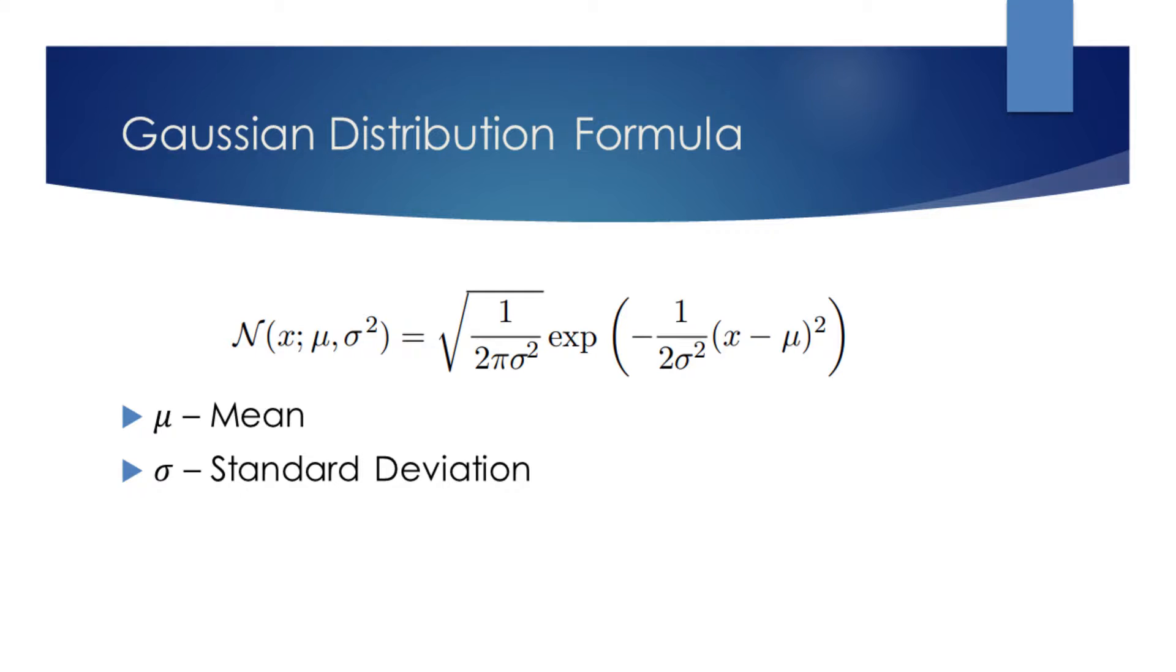We can now see the formula of the normal distribution. This function has two parameters, mu and sigma. Mu stands for the mean or the expected value of the distribution. Sigma specifies the standard deviation.